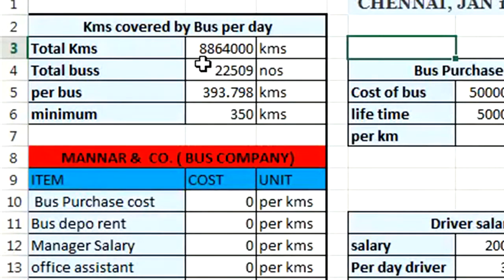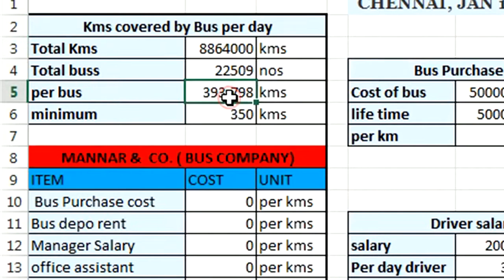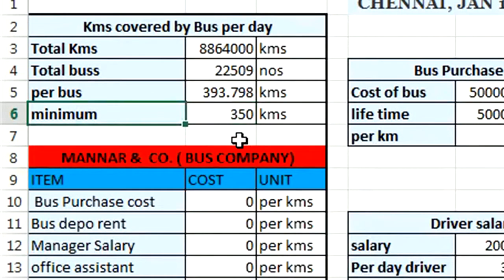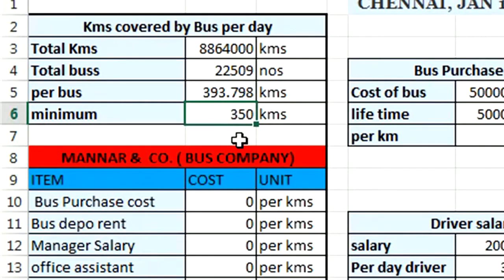Total kilometers traveled is 88.64 lakh kilometers and there are 22,509 buses. Dividing total kilometers by the number of buses, each bus is traveling 393.798 kilometers per day. We optimize this and assume 350 kilometers per day for our calculation.